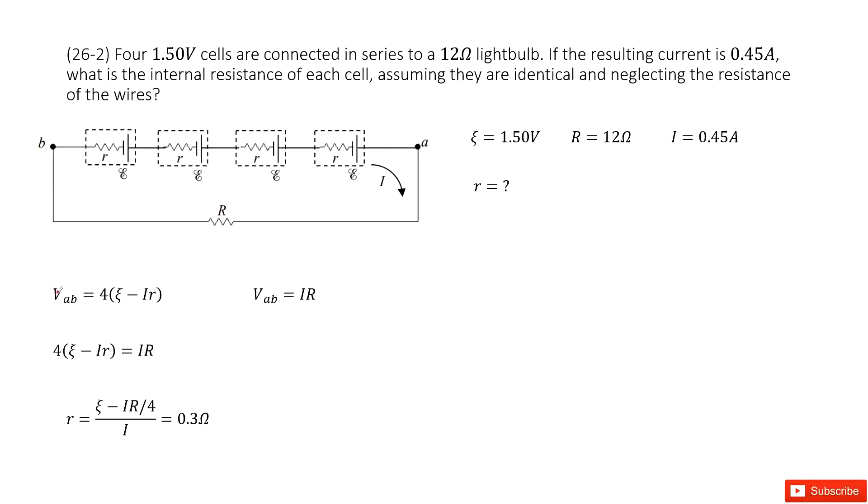So in this case, we can say terminal voltage for these four batteries can be written as the number four times the term: EMF minus the current times the internal resistance. Agree?